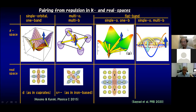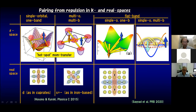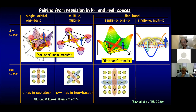If we turn to the flatband systems, they come in two flavors. One is a single-orbital one-band system — we've got one band but with flat portions in the band dispersion. Between the dispersive part and flat part, there are many nesting vectors. So while we've got hotspot momentum transfer — in cuprates, hotspots are the antinodal regions; in iron-based, hotspots are electron and hole pockets — in this case we've got a bunch of nesting vectors across which Cooper pairs can virtually hop, giving a very spatially extended pairing in real space.